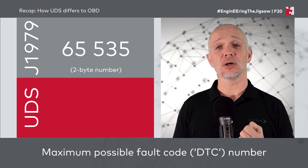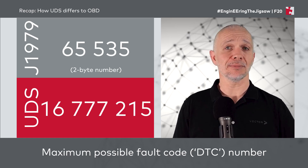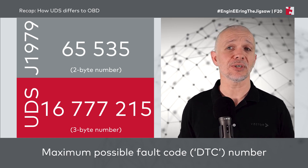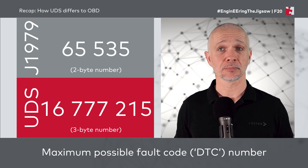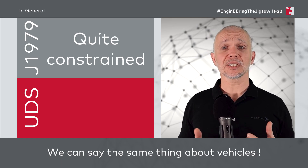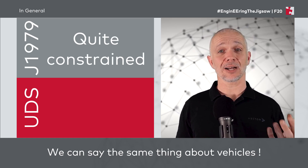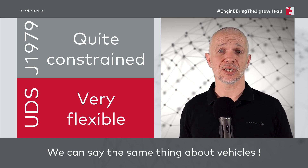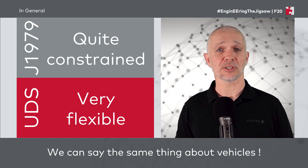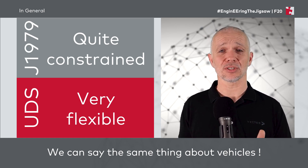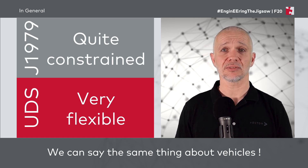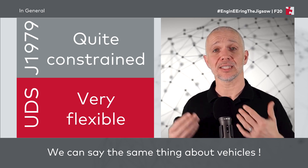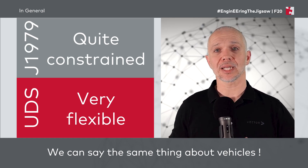With UDS we can go bigger again — up to 16,777,215 — because UDS uses three-byte numbers to represent fault codes and DTCs. So in general we can say that J1979 is quite constrained in comparison to UDS, which is very flexible. This reflects the context of their development: J1979 was designed for what vehicles could do in the late 1980s and early 1990s, whereas UDS was developed much later when vehicles could do more things.